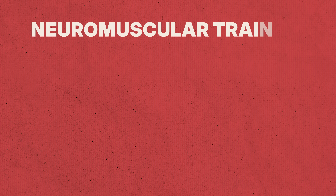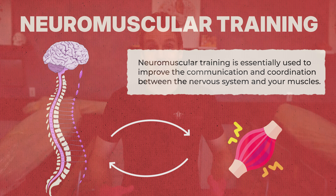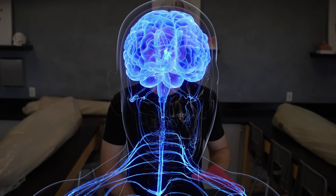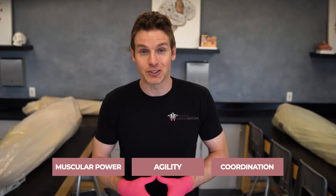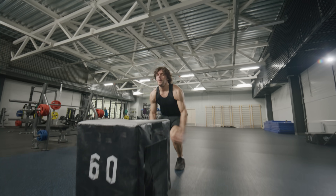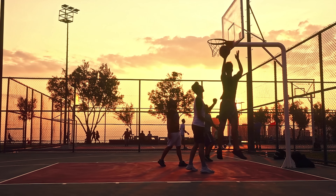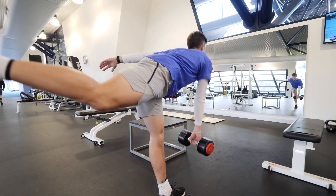So what about preventing an ACL tear? Is there anything you can do to reduce your risk? According to research, you can reduce your risk by incorporating neuromuscular training into your routine. Neuromuscular training is essentially used to improve the communication and coordination between the nervous system and your muscles. This includes plyometrics — exercises that include rapid explosive movements that train your nervous system to recruit muscle fibers effectively and quickly — improving muscular power, agility, and coordination, all of which are important for preventing ACL tears. It also includes landing drills, because practicing landing over and over with proper form makes it almost automatic during sporting events.